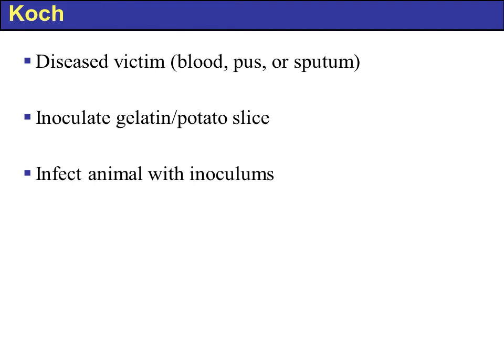Koch devised what is called Koch's postulate and designed many laboratory techniques still used today. Koch's postulate is where he looks at a disease victim, isolates something from them — blood, pus, or sputum — and inoculates it onto gelatin or a potato slice, culturing the microbe outside the body. He then infects an animal with the inoculum taken from the culture, and that animal should develop the disease.